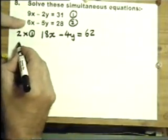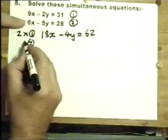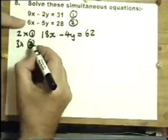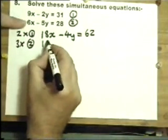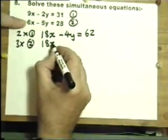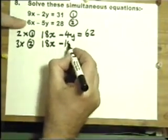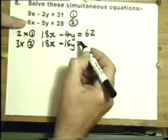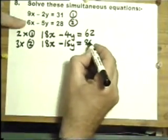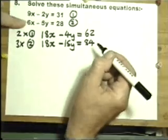I need to turn 6 into an 18, so I'll take hold of equation 2 and I'll treble it. 3 times 6, 3 times 5, and 3 times 28. Don't forget, it's a calculator paper, so don't panic there.